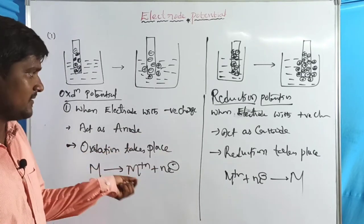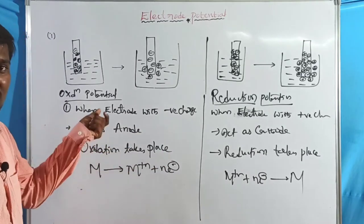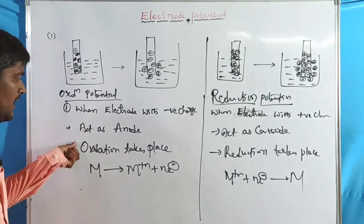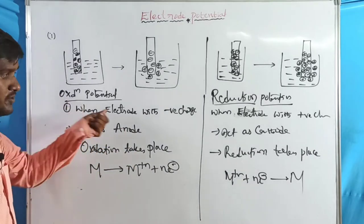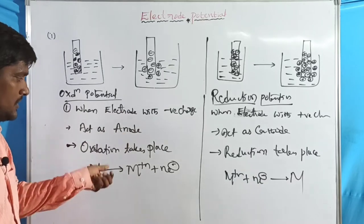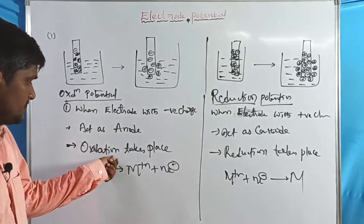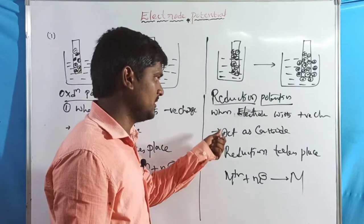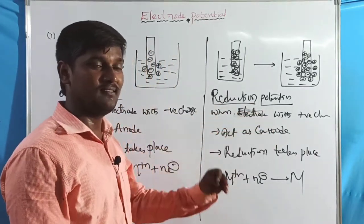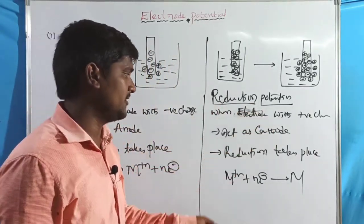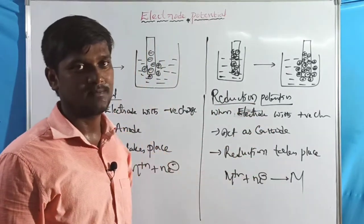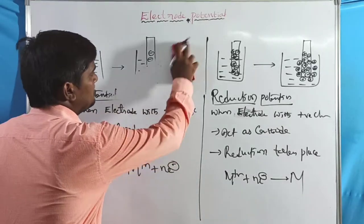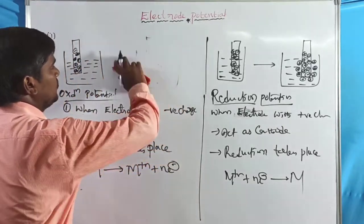In galvanic cells, the left-hand side electrode is named the anode, shown by a negative charge, where oxidation and loss of electrons take place. The right-hand side electrode acts as the cathode, where reduction takes place. Now let us go through the measurements of electromotive force.